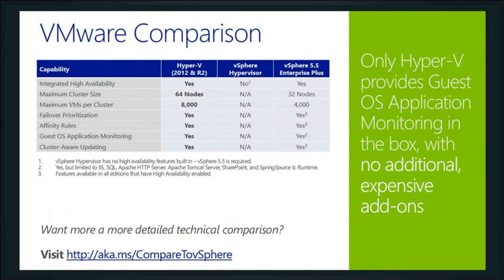When we look at the comparison from an HA and clustering perspective, the only difference is that we support 32 more nodes and up to 4,000 more guests. I'd just like to have a system where I could have 64 nodes. These are things built into Hyper-V, but to get to this level of clustering with VMware, you'll need Enterprise Plus. This is where we see that big difference between what I can do with Windows Server built out of the box and the tools available.